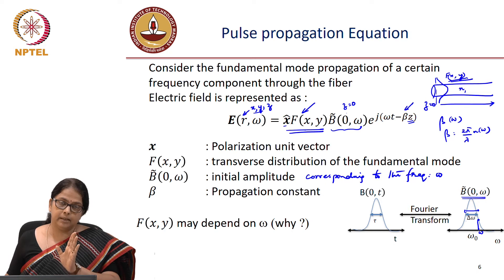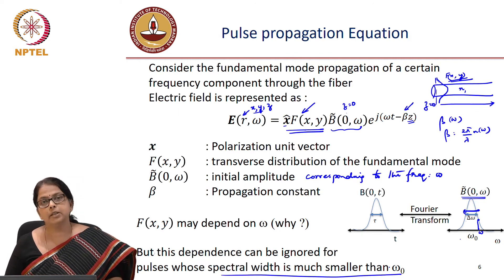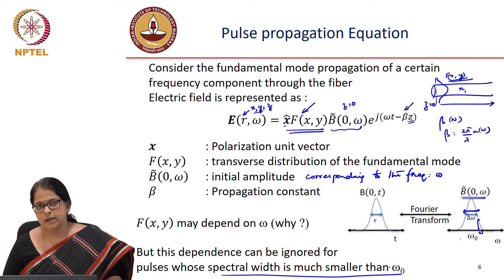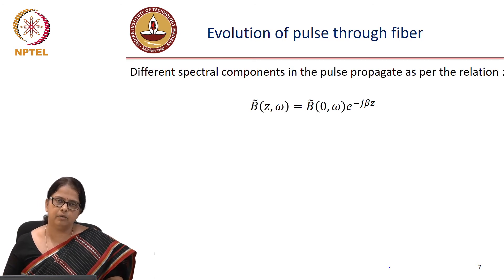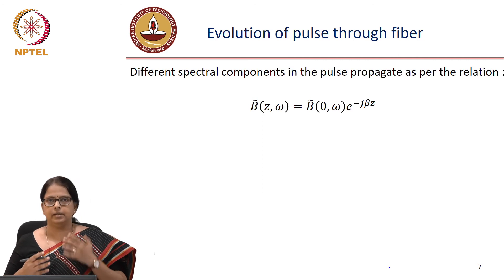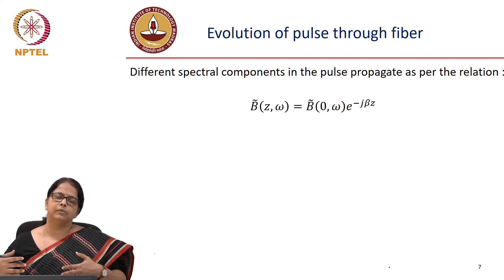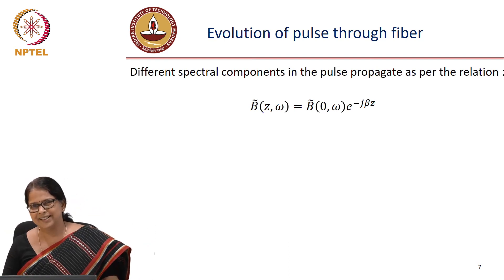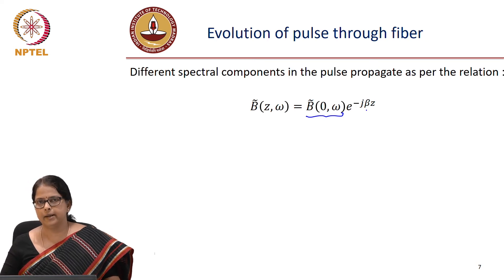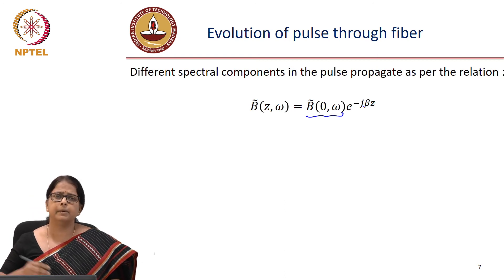Otherwise things become complicated — different frequencies would require different modal profiles. This approximation is valid as long as the spectral width delta omega is much smaller than the carrier frequency ω₀. We want to know the equation that describes the evolution of this pulse as a function of z so that we can write down the transfer function, and once we know it, invert the transfer function to do dispersion compensation. The evolution is simple: you can think of it like a plane wave which accumulates a phase beta as it propagates along z, of the general form e^{j(ωt − βz)}.